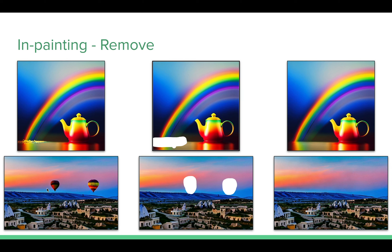Another example: we have a scenery with two hot air balloons which are undesirable. We create a mask around them and click generate again. This time it removes them and the image feels natural.